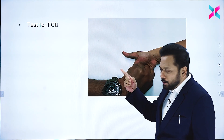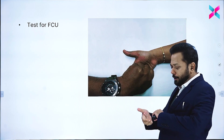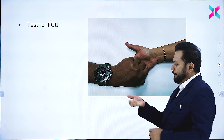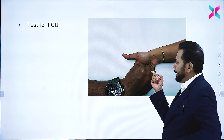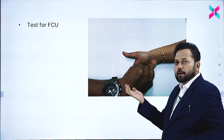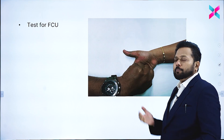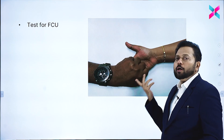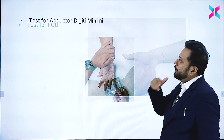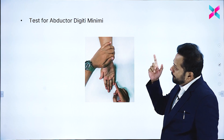The second test is for flexor carpi ulnaris. Hold the patient's hand and ask them to ulnar deviate the hand. Normally they should be able to deviate it towards the ulnar side. If there is ulnar nerve palsy, the patient cannot do that. This is the test for flexor carpi ulnaris.